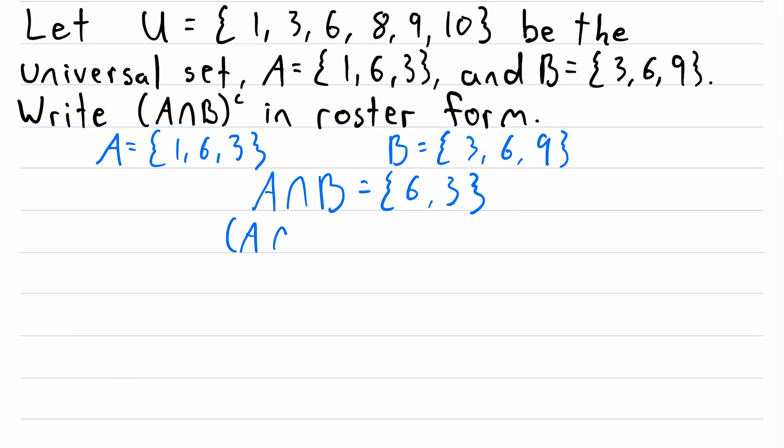So then we just have to find the absolute complement of A intersect B. Well remember what absolute complement is. The absolute complement of A intersect B is the set containing all elements of the universal set that are not in A intersect B. So if we look at A intersect B and see that it has 6 and 3, then look up at our universal set, we can cross off 6 and 3.